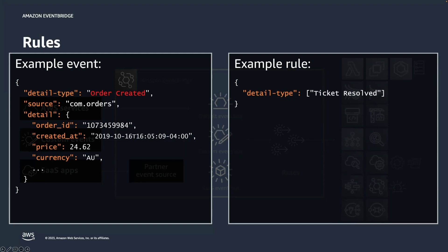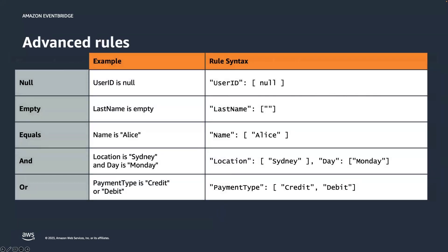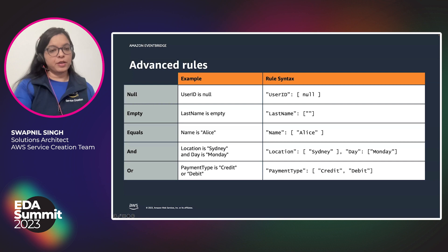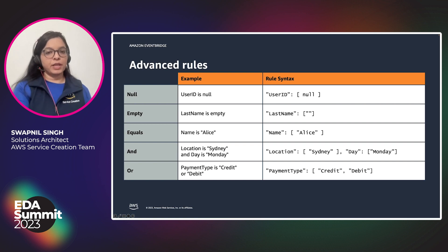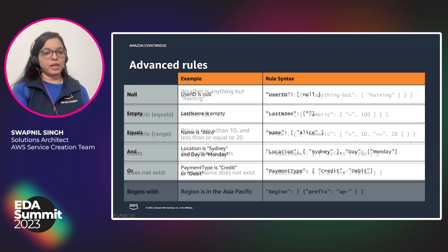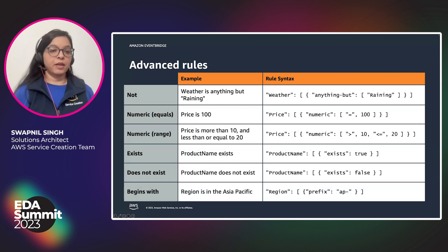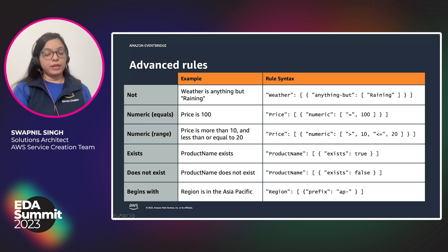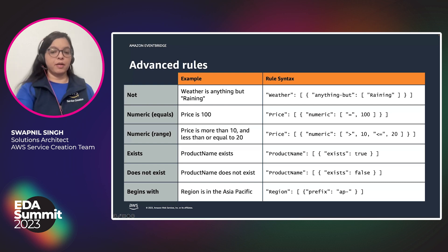These were some simple event rules, but more complex event rules can also be created since business logic is never simple. You can create rules where multiple elements must match — for example, location is Sydney and day is Monday. You can also filter using comparisons: not equal to something, a numeric value within a range, or whether a data element exists or not. There are multiple complex rules you can create.